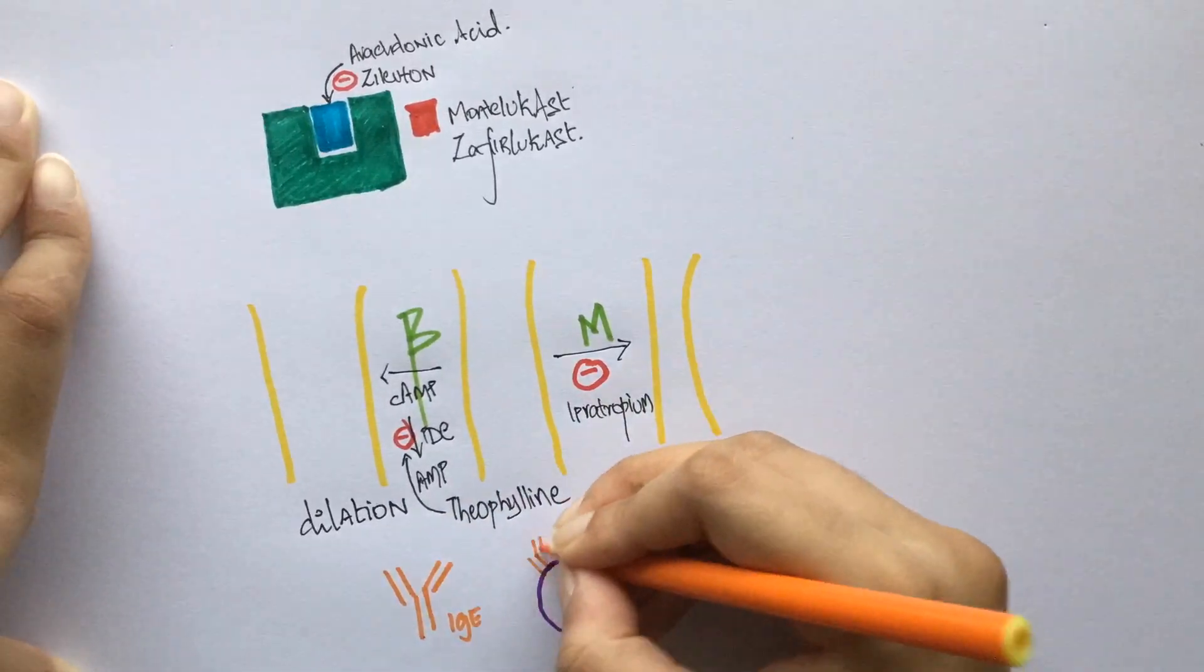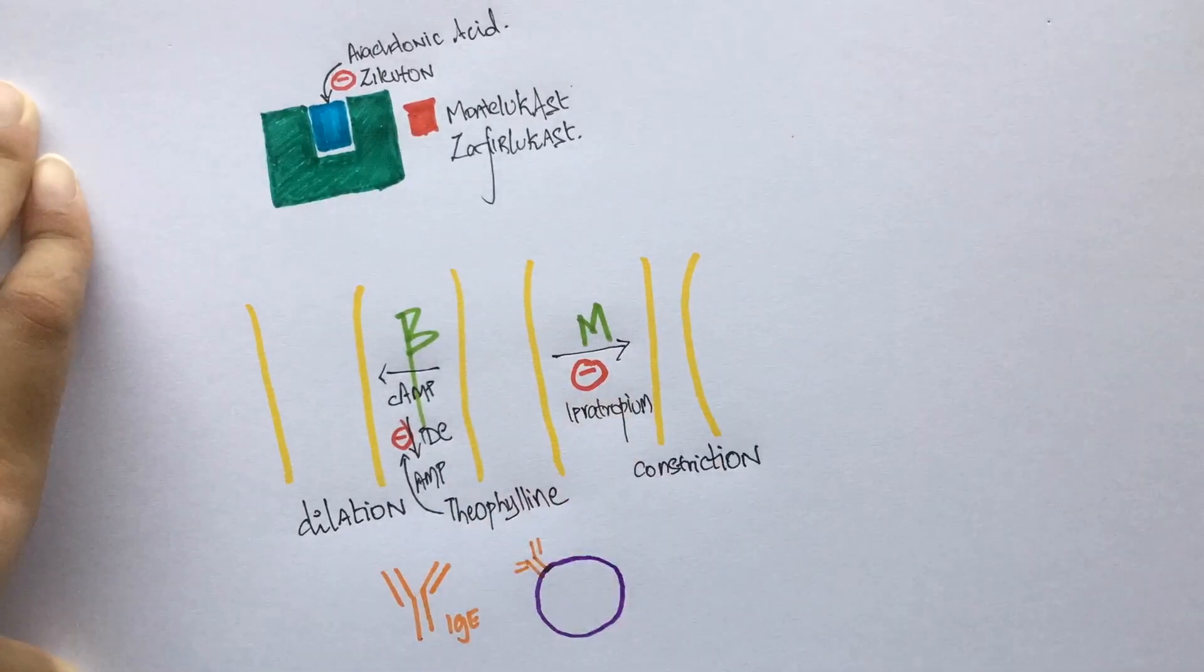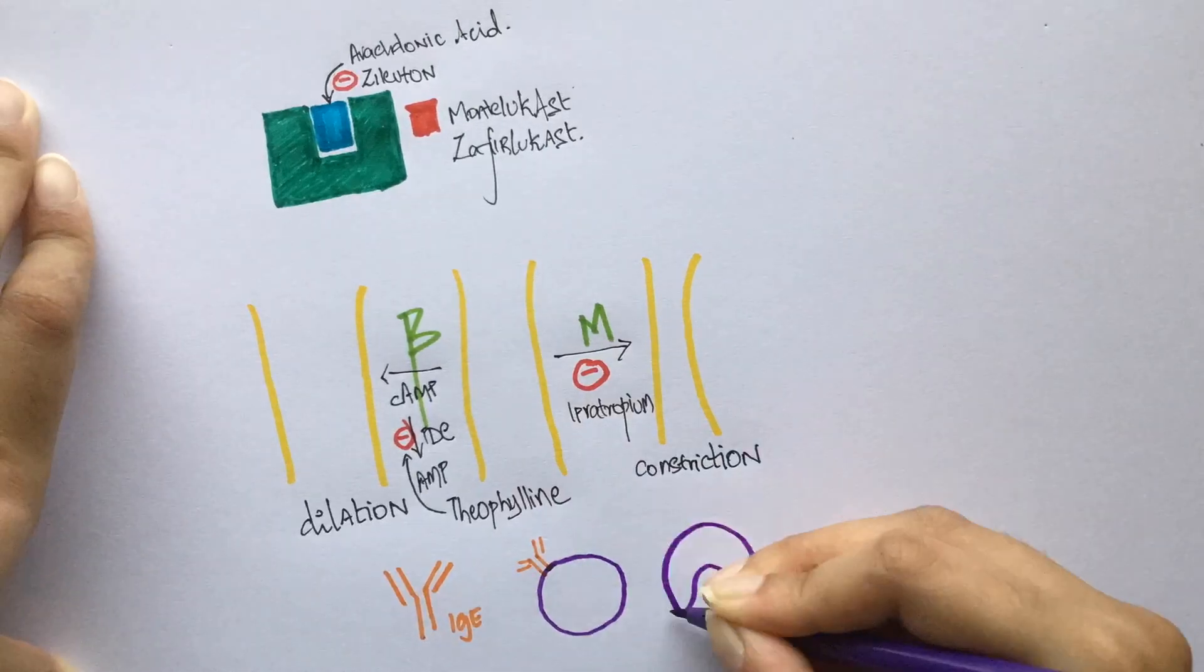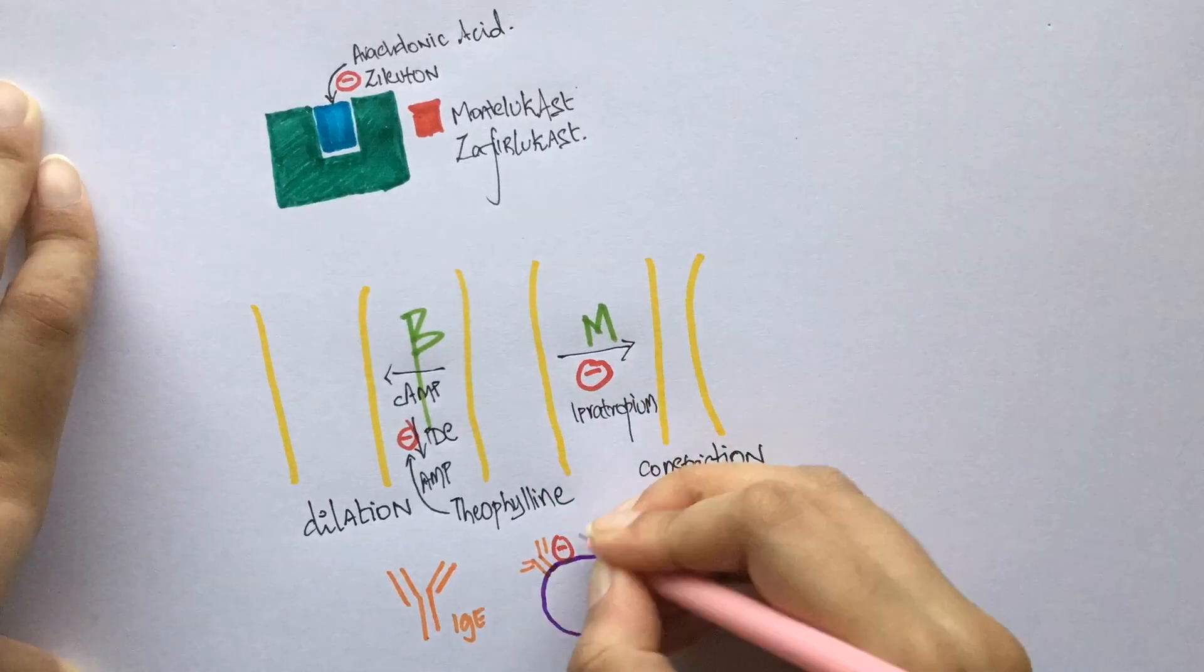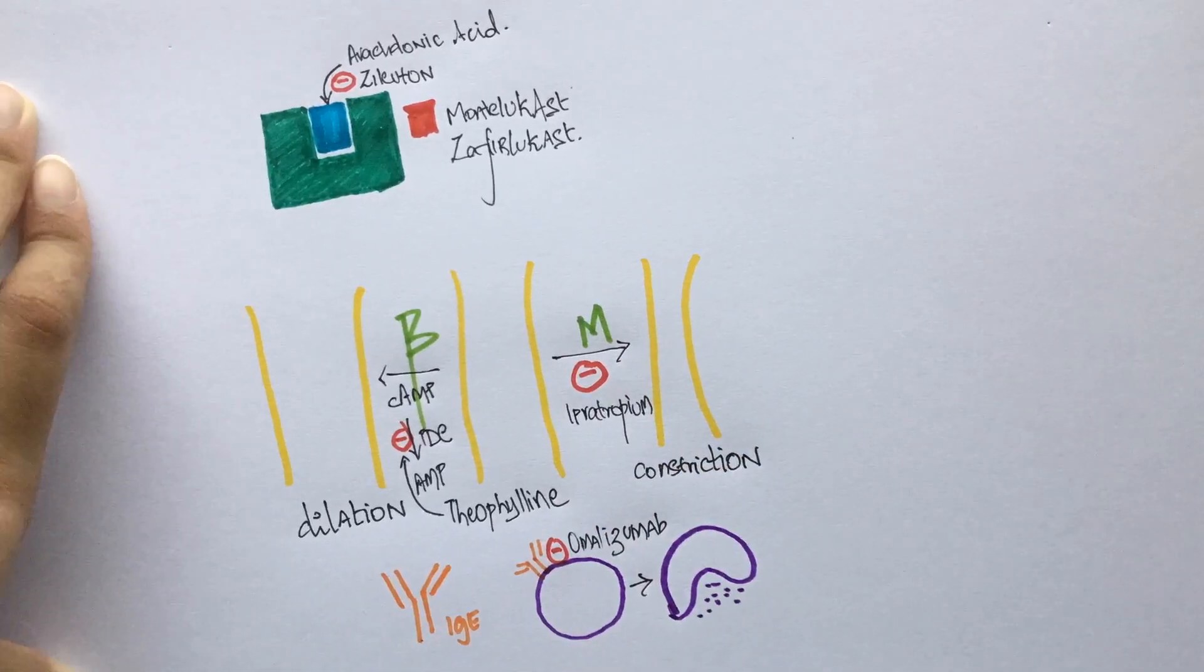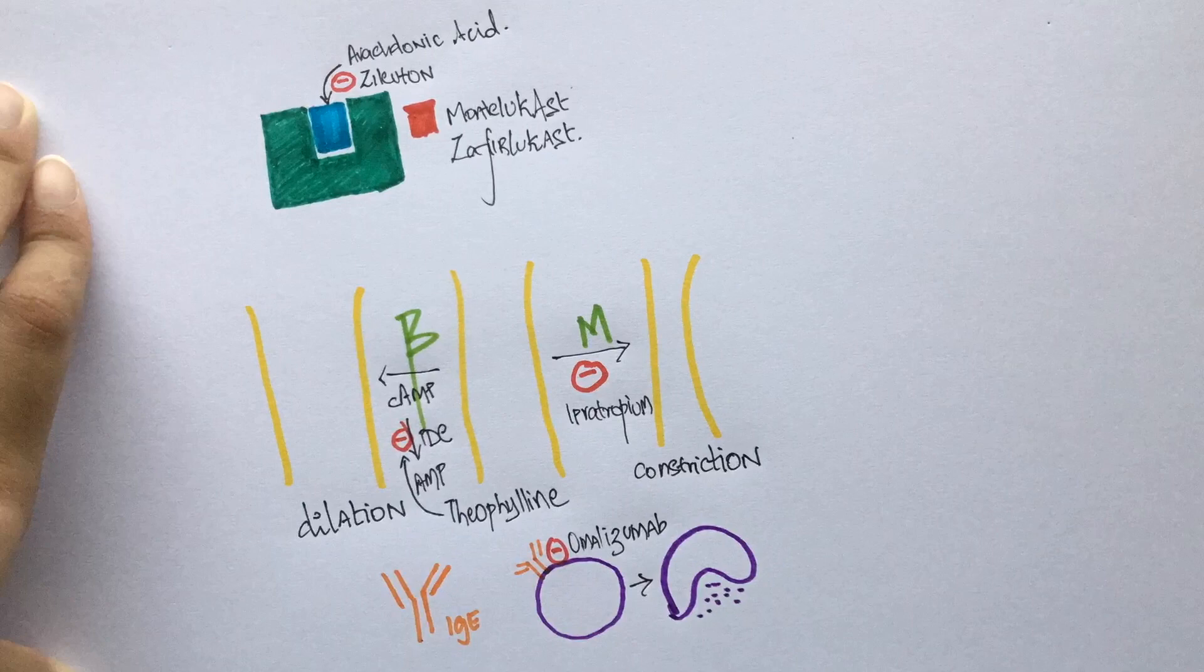Omalizumab works by interfering with the second mechanism. It is a monoclonal antibody which binds to IgE. It prevents IgE from binding to mast cells and hence prevents degranulation. Degranulation is one of the main processes involved in inflammation of the airways.